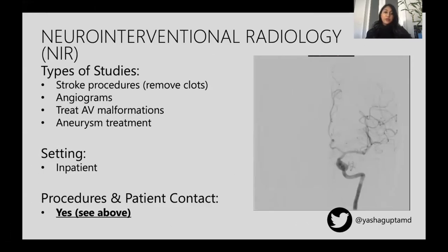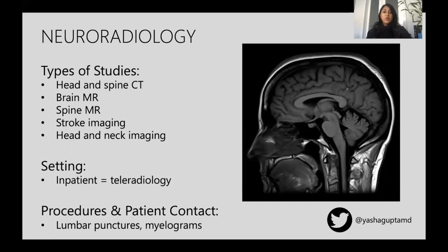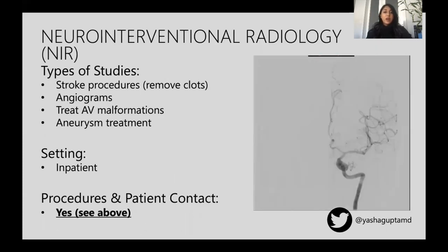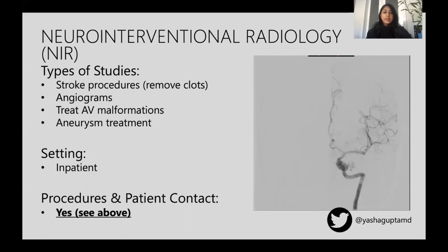An offshoot of neuroradiology is neurointerventional radiology, which requires additional fellowship training after your one or two years of neuroradiology. Neurointerventionalists are the people who come in when there's a stroke and there's an indication to mechanically remove the clot. They do cerebral angiography, treat AV malformations, treat aneurysms, and some even have ways to treat brain tumors or neurooncology. There are a lot of procedures that I haven't mentioned, but these are probably the most common. This would obviously have to be inpatient, and like any primarily procedural subspecialty, there is lots of patient contact.